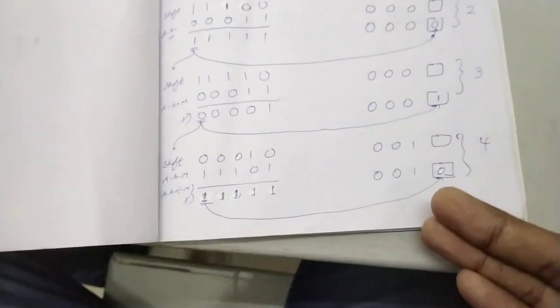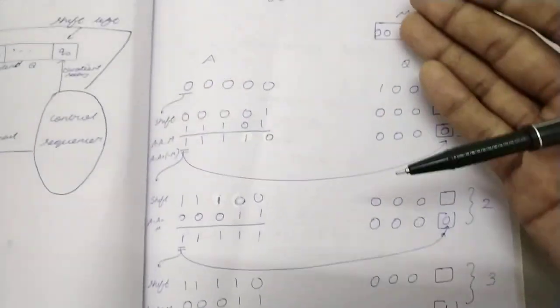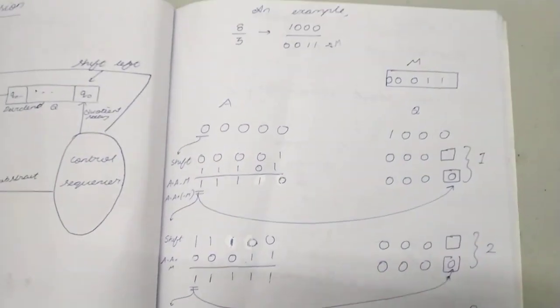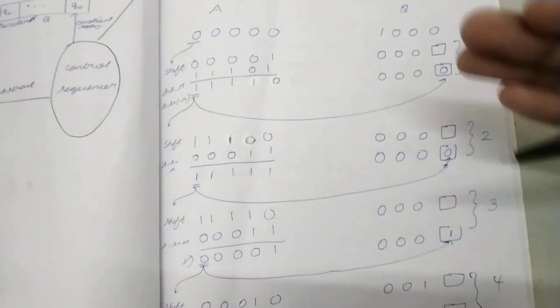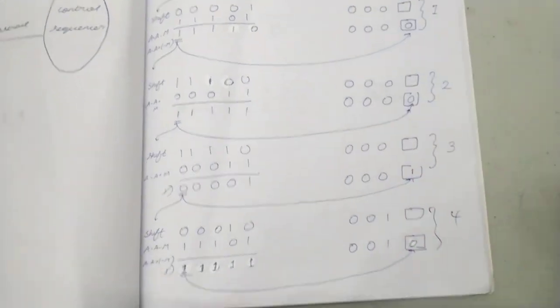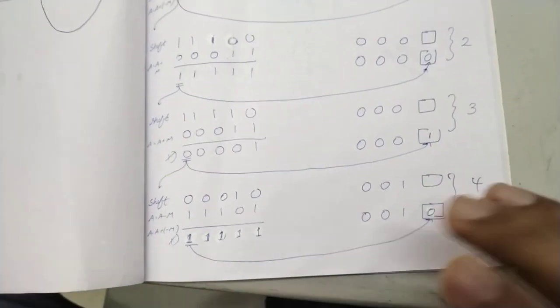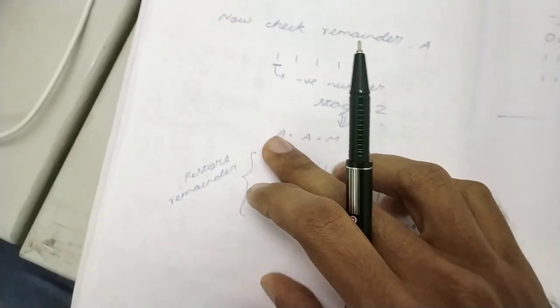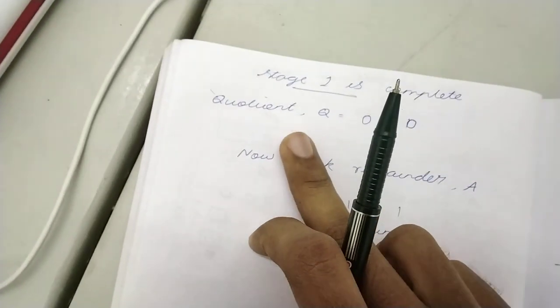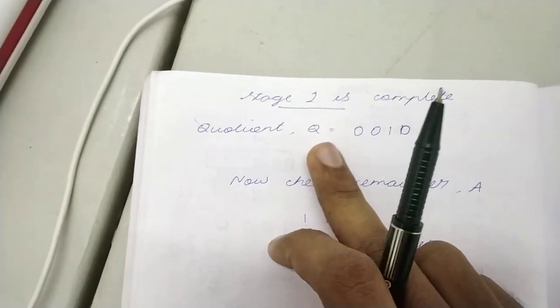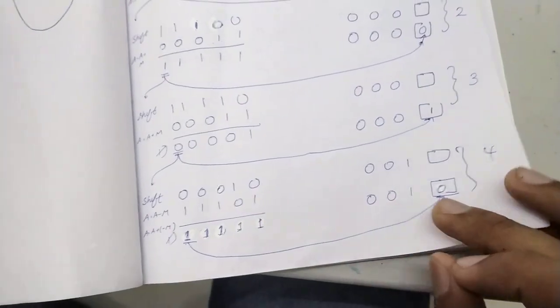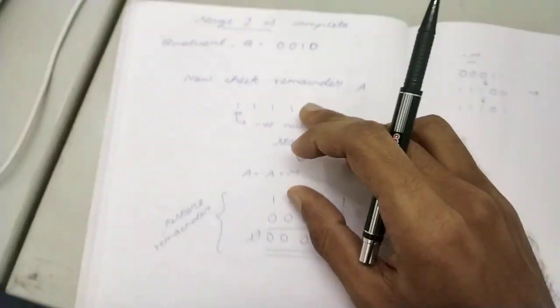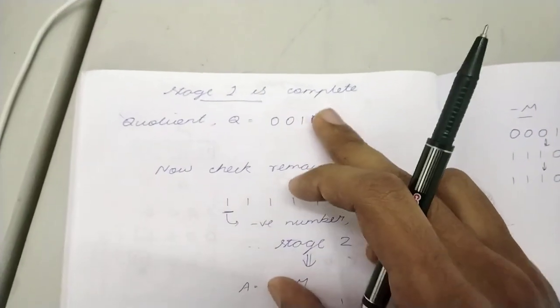The whole division process is now complete. What is the quotient? The quotient is whatever is in the Q register right now: 0010. That is our quotient.